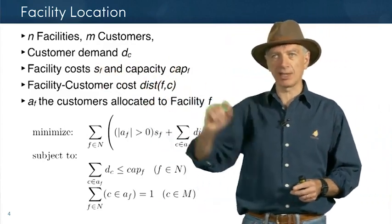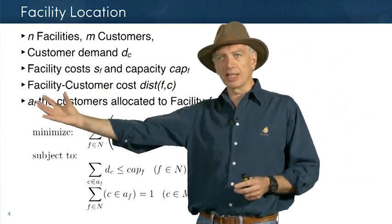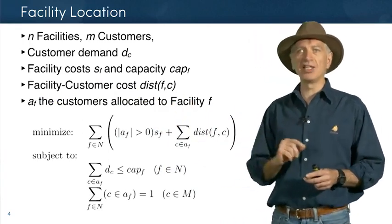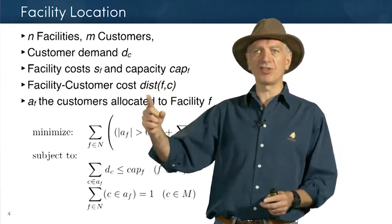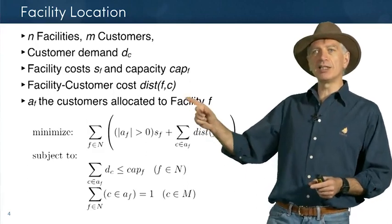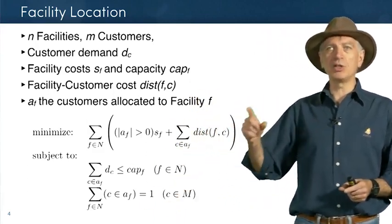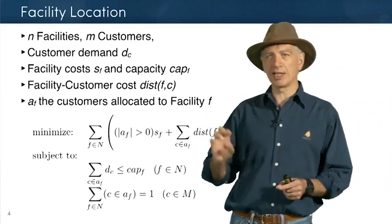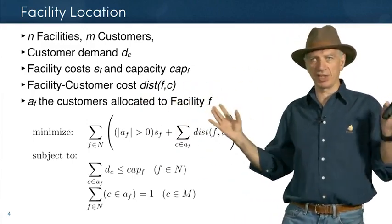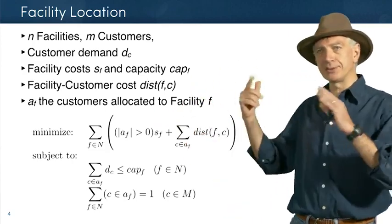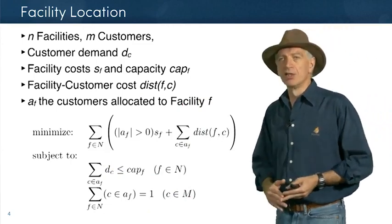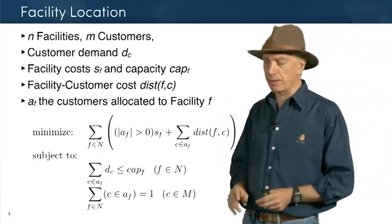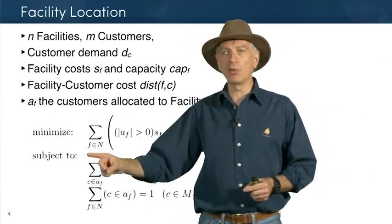There is a transportation cost from facility F to customer C, modeled as the distance-based cost FC. The only decision variables in this model are the sets A_F — the set of customers allocated to facility F. Once you have all these decision variables, you have everything needed to compute the cost and verify the constraints.